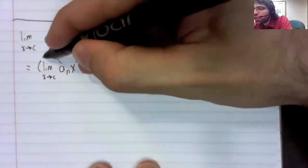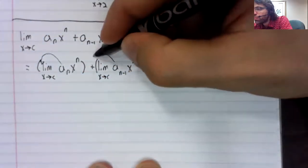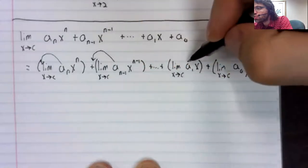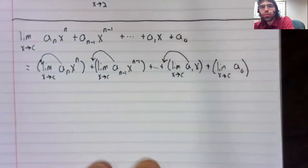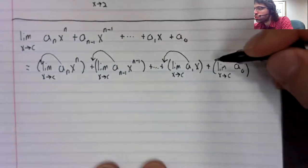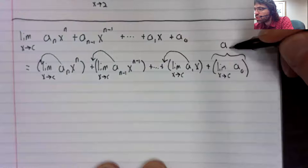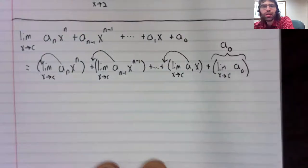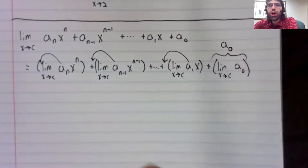Now, these a sub i are all constant multiples. According to our constant multiple rule, we can pull them all out. Here, there's not really anything to pull it out of, but the limit of a constant is a constant.